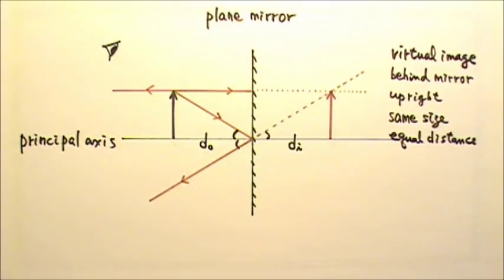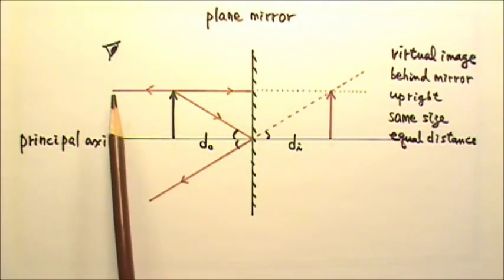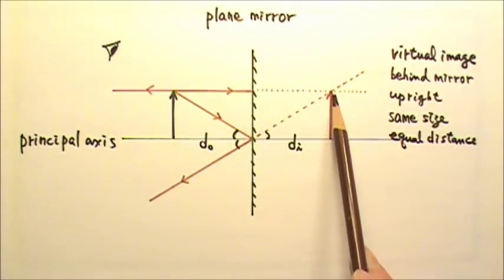Now let's look at how an observer actually sees the image. Suppose the observer's eye is right over here. He or she would not receive these two reflected rays, but the observer can receive other reflected rays. The observer can receive a ray that looks like it is from the tip of the image.